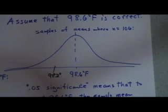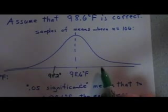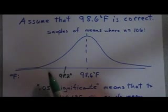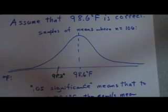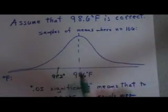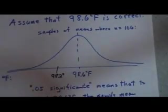It's possible you could have taken the temperature of 106 people and their average temperature was 100 degrees. Possible. It's possible we could have had 106 people and the average temperature for them was maybe clear down here at 97. Possible. Likely? No. What's likely? If 98.6 is actually correct, it's likely that we'll get something right around 98.6.